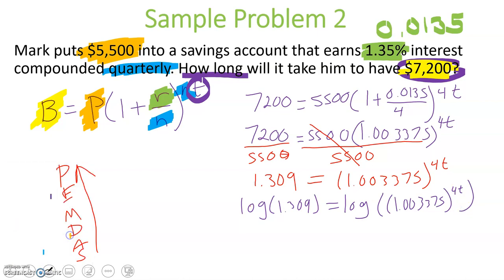Then just a quick reminder, we have our power property, which says that if we take the log of a power, our power jumps out front. So we have the log of 1.309 is equal to 4T times the log of 1.003375.